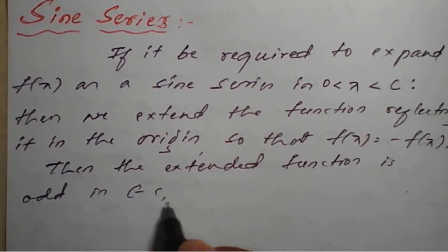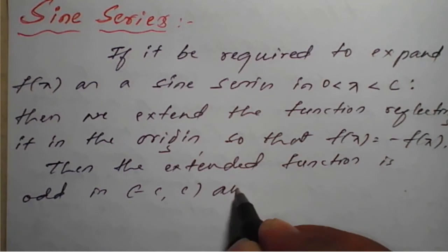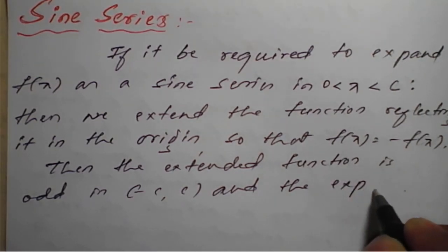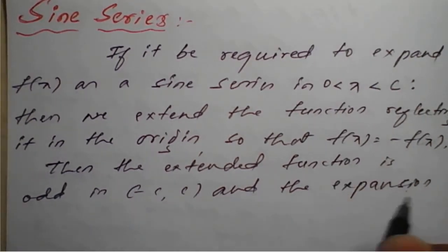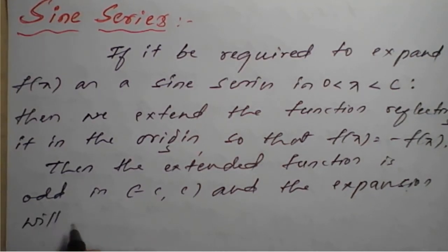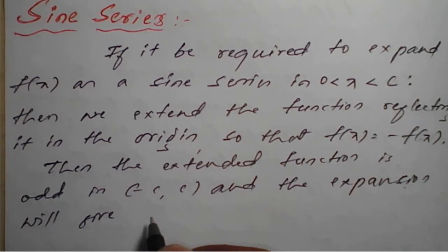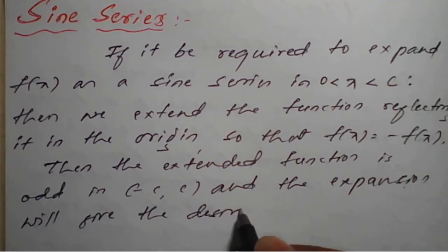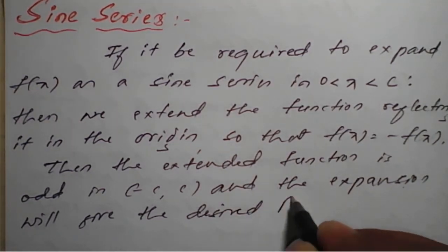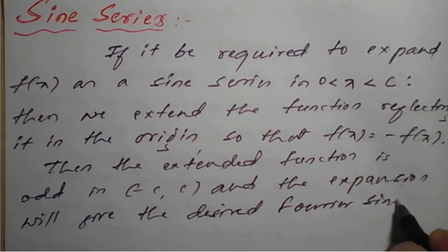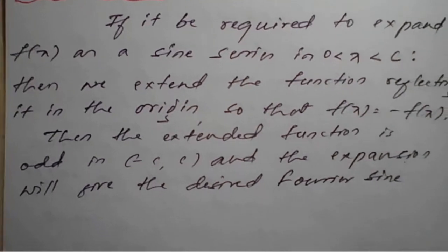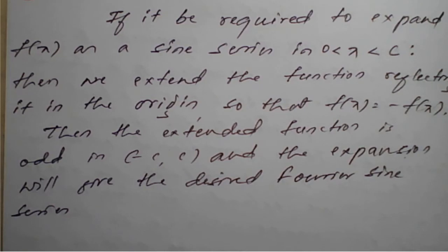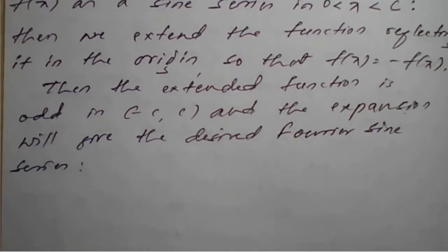The extended function is odd in (-c, +c) and the expansion will give the desired Fourier sine series. Remember: even function gives a cosine series, but the odd function gives a Fourier sine series.